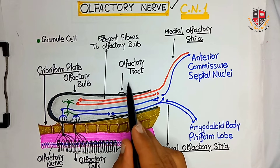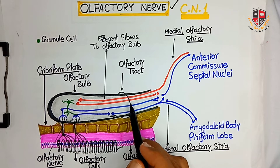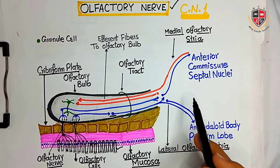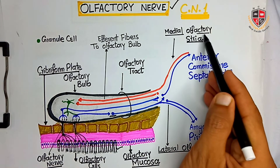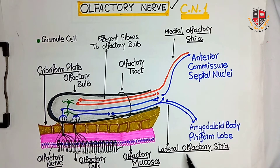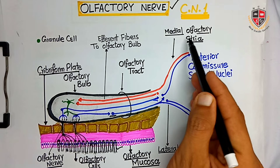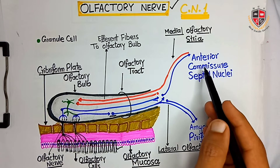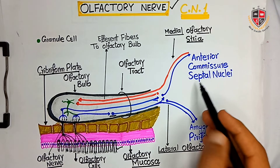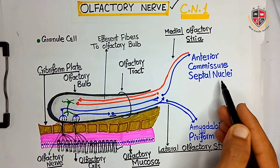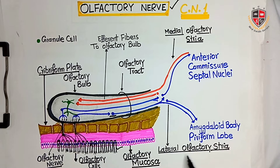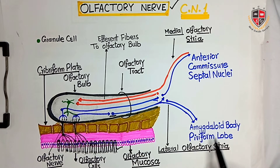This forms the olfactory tract. The olfactory tract then divides into the medial olfactory stria and the lateral olfactory stria. The medial olfactory stria terminates at the anterior commissure and septal nuclei, while the lateral olfactory stria terminates at the amygdaloid body and piriform lobe.